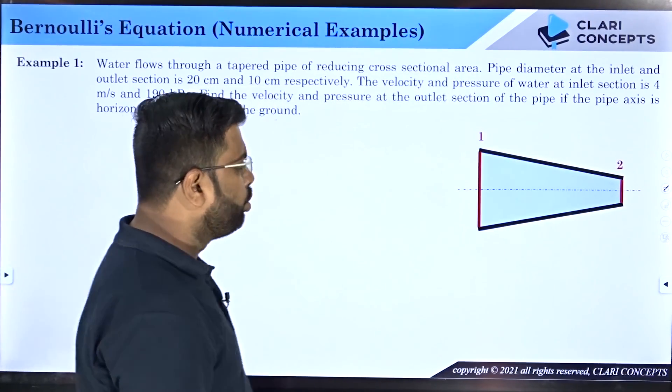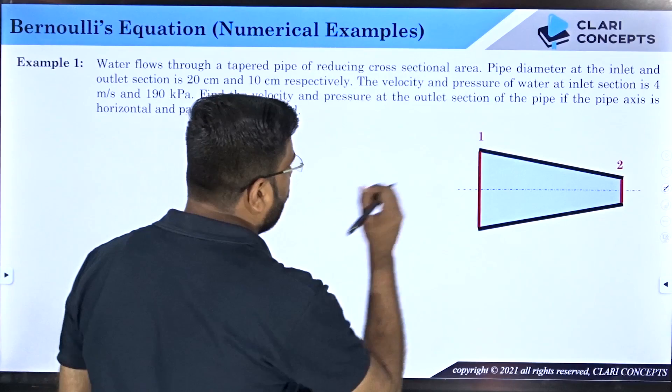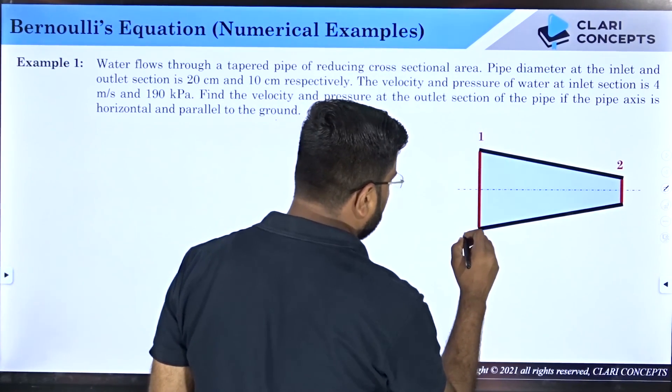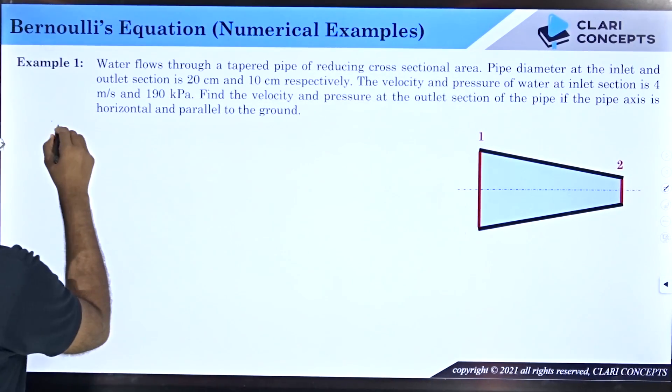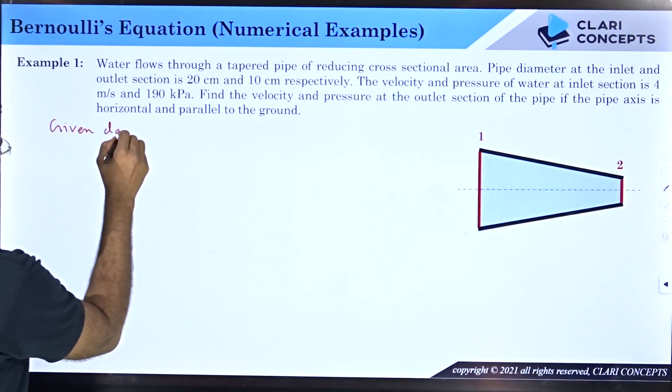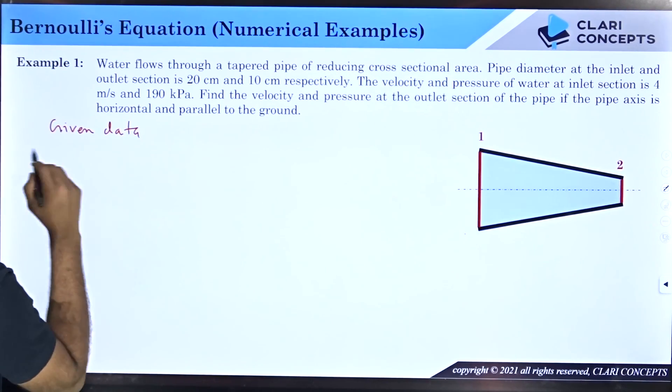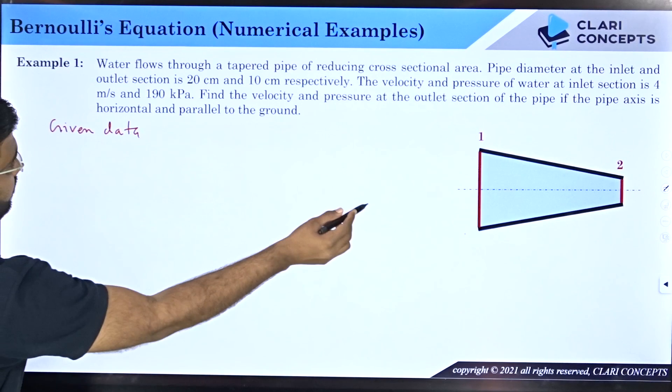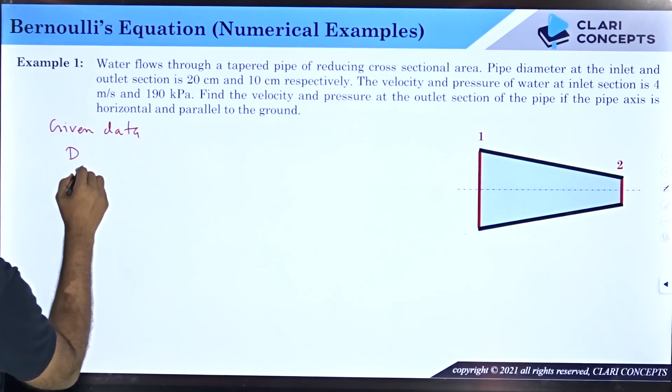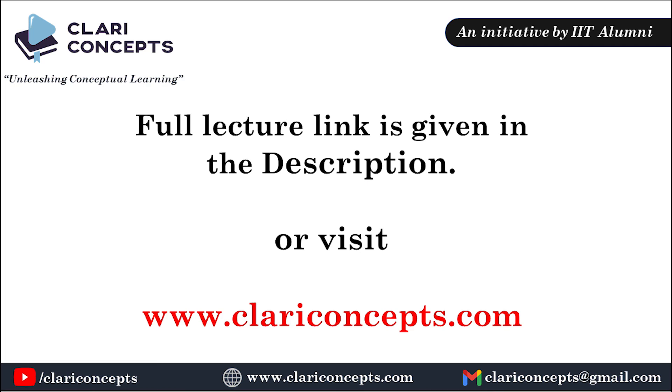Now what is given to us? I have been given velocity and pressure at this section, so I can say that given data: firstly, I have been given the diameter at the inlet, so d1 is equal to...